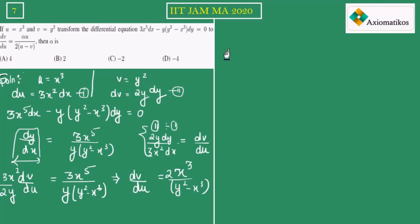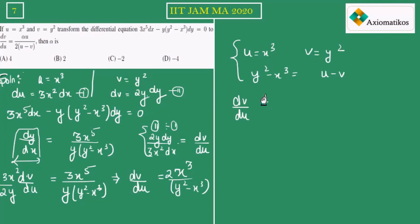Now, we have u equal to x cube and v equal to y square. So y squared minus x cube becomes v minus u, but wait — the correct sign gives us that y squared minus x cube is equal to minus times of (u minus v). So dv by du equals 2u over minus(u minus v), which simplifies accordingly.